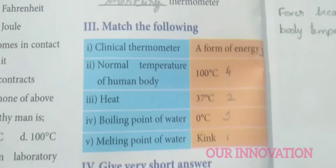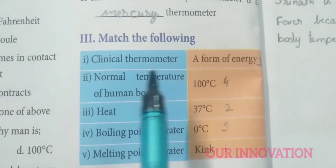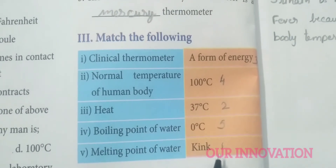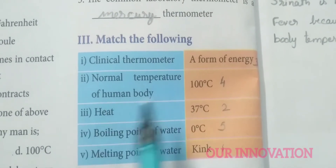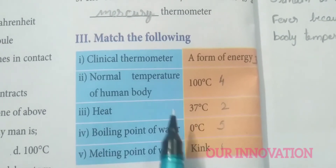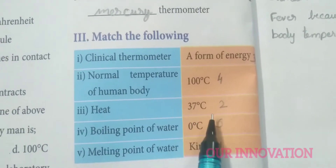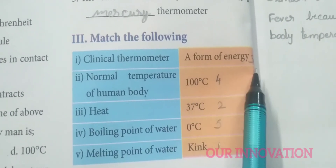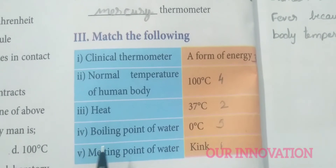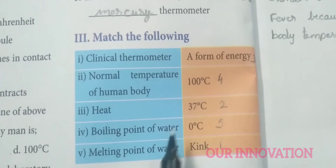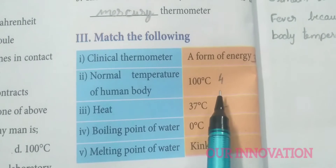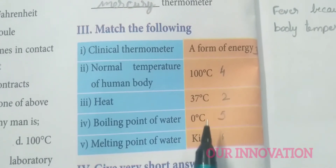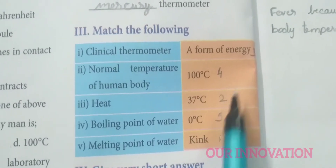Now, match the following. A clinical thermometer has a kink. Normal body temperature is 37 degree Celsius. Heat is a form of energy. The boiling point of water is 100 degree Celsius. And the melting point of water is 0 degree Celsius.